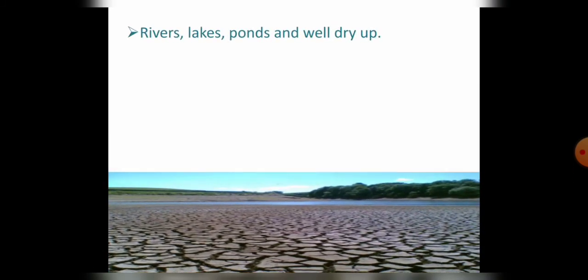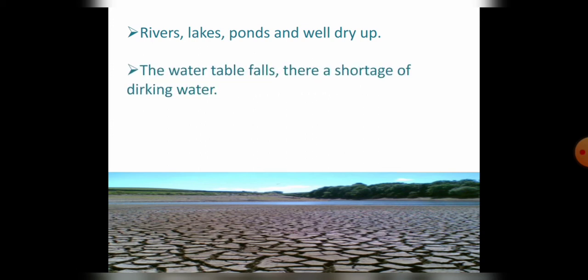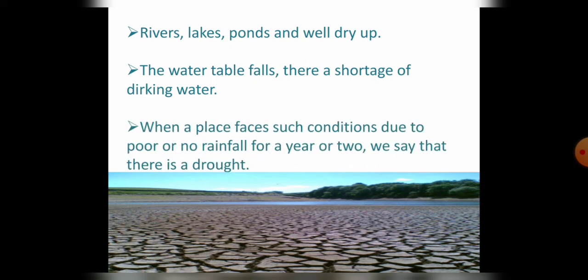बारिश लंबे समय से ना होने पर नदी, तालाब और कुएं सूख जाते हैं, और water table का जो level है वो भी कम हो जाता है, जिससे पीने के पानी की जो किल्लत है वो सामने आती है।